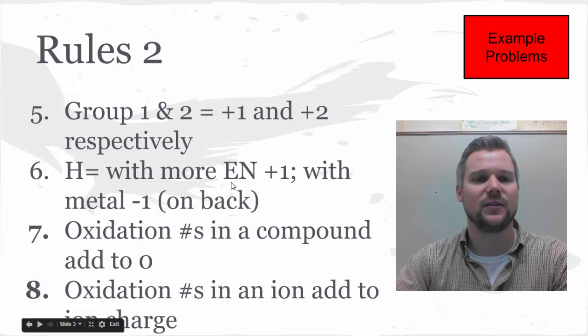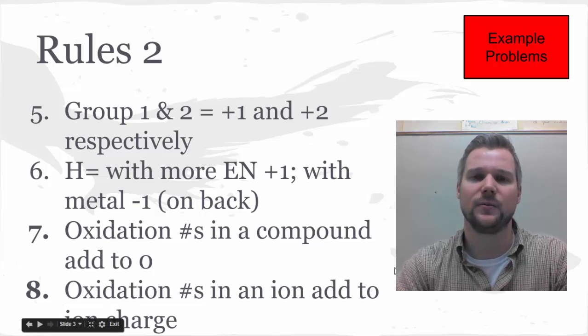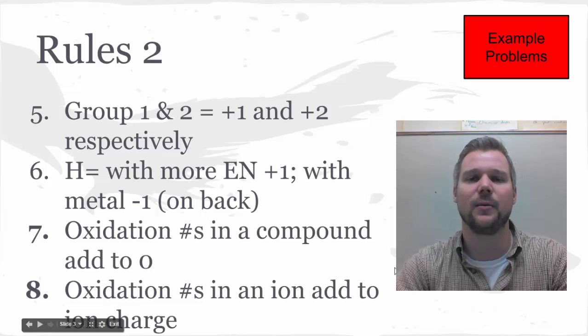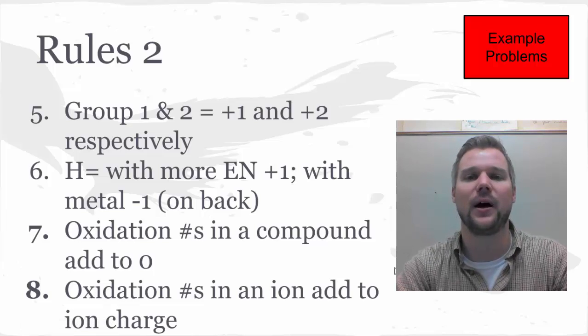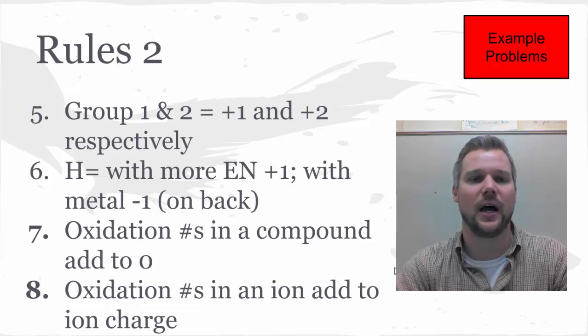Moving on to the second slide, group one and two are going to form +1 and +2 ions respectively. That's just predicted if we're talking about a metal to a non-metal or a metal to a polyatomic ion. Those first two groups take their predicted ion charge.